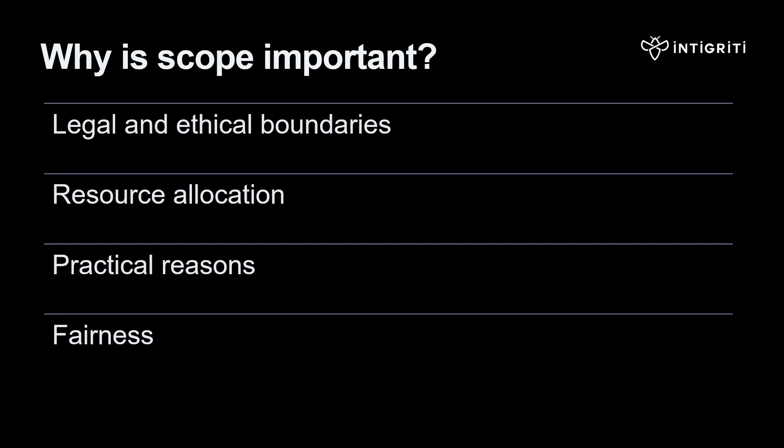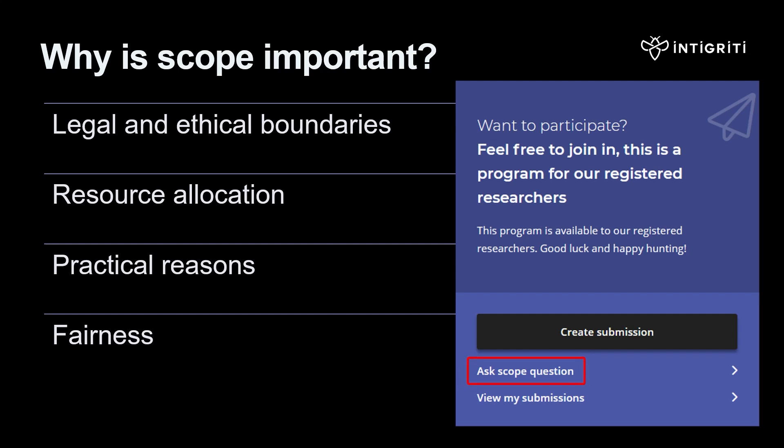So why is scope important? First of all, legal reasons. The scope helps set the legal and ethical boundaries for security research. By clarifying what is out of scope, organizations can avoid potential conflicts with laws and regulations. Researchers at Integrity are provided safe harbor and will not face any legal action on the condition that they follow the program's rules. If you're in doubt, you can use the ask-a-scope question to clarify any questions you might have.